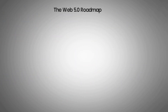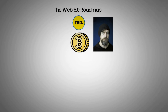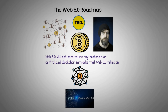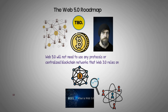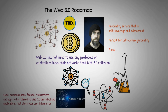The Web 5.0 roadmap: TBD is developing a version of the internet based on Bitcoin, due to Jack Dorsey's support for Bitcoin and his belief that it is the best decentralized network. Web 5.0 will not need to use any protocols or centralized blockchain networks that Web 3.0 relies on — instead, it will rely solely on the Bitcoin blockchain. This project aims to create a class of decentralized protocols and apps that allow social communication, financial transactions, and apps to be filtered via Web 5.0's decentralized applications. TBD is working on decentralized identifiers, a self-sovereign and independent identity service, an SDK for self-sovereign identity, and a decentralized website node.